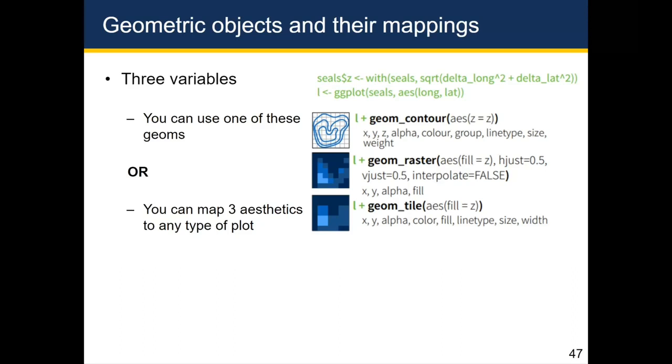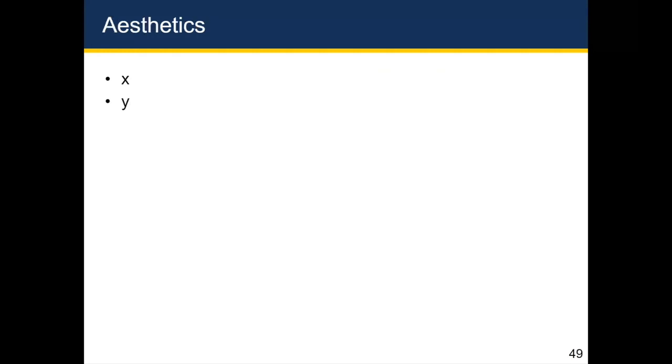Now that we've talked about some of the geometric objects that are available, let's talk about mappings. You'll remember that in the pictures or in the cheat sheets that you have, each geometric object has a specific set of aesthetics that works with it. But in general, these are the aesthetics that are available across most of the objects. The obvious ones are the x and y-axis. And so you can map variables to each of these axes.